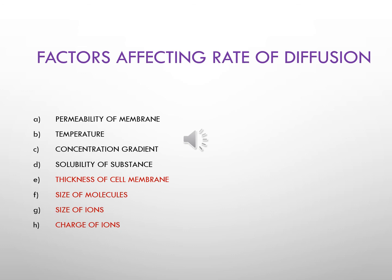However, this is not always true — sodium ions are smaller than potassium ions, but potassium ions diffuse at a faster rate than sodium ions. This is because sodium ions have a property of gathering water molecules around them, which slows their diffusion. Then, charge of ions: when the charge of an ion is greater, the rate of diffusion is less — for example, calcium ions are diffused at a slower rate compared to sodium ions. These four factors — thickness of cell membrane, size of molecules, size of ions, and charge of ions — inversely affect the rate of diffusion.